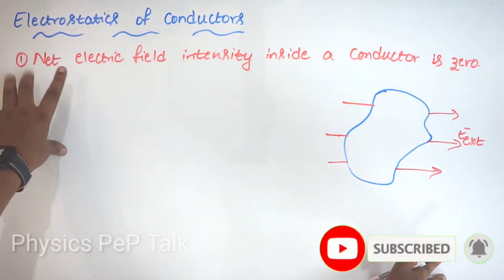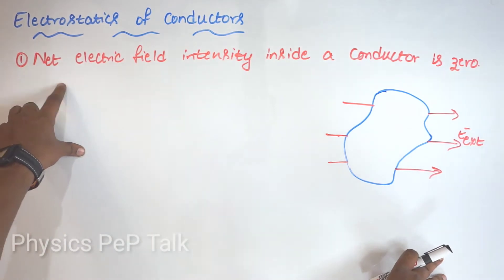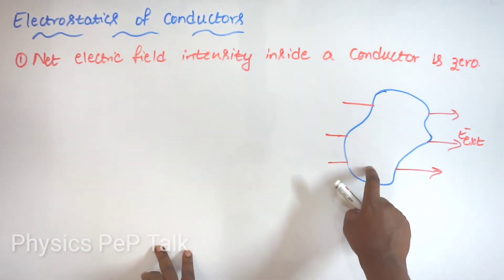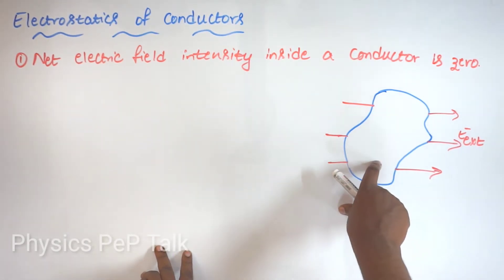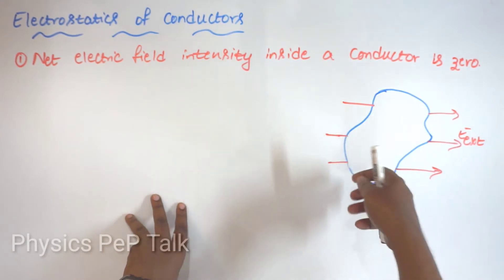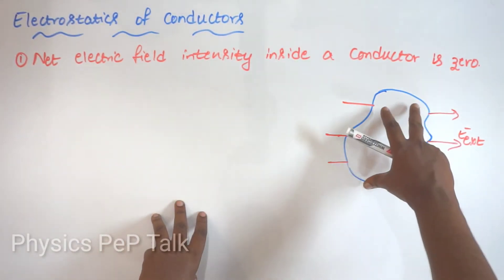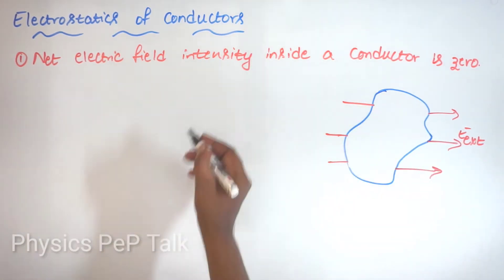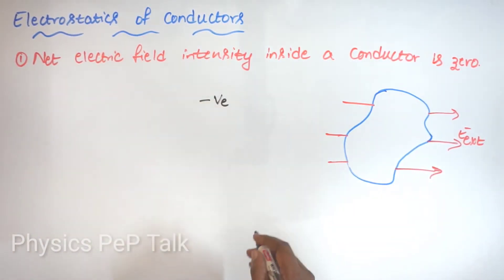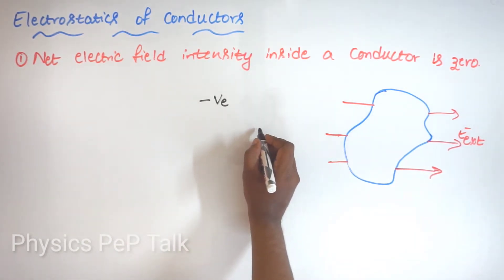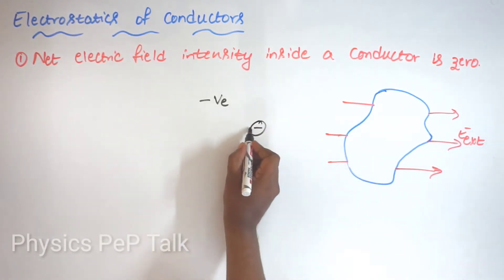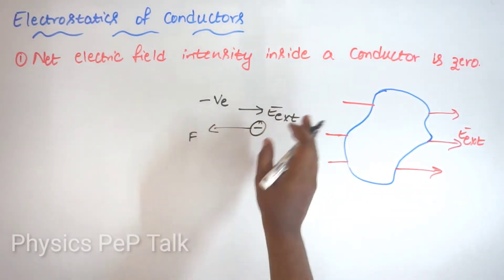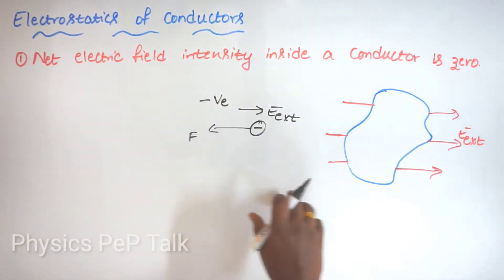The first point of electrostatics of conductors states that the net electric field inside a conductor is zero. Consider a conductor having a large number of free electrons ready for conduction. When this conductor is placed in an external electric field, the electrons, being negatively charged, experience a force opposite to the direction of the applied electric field.